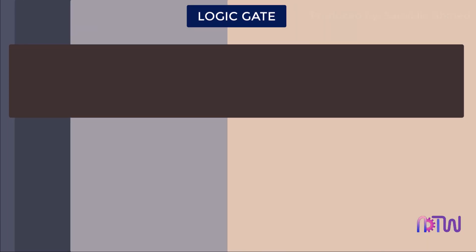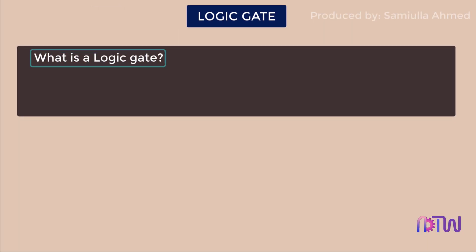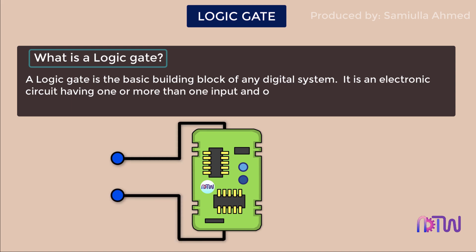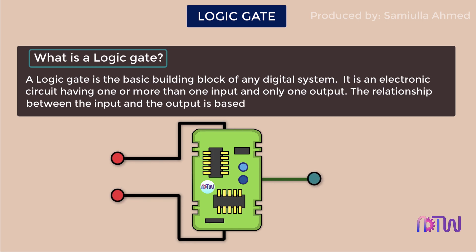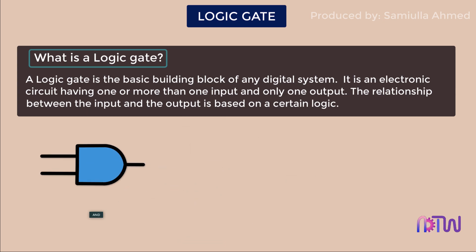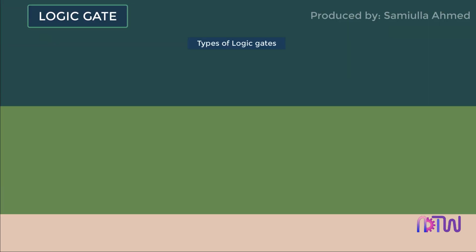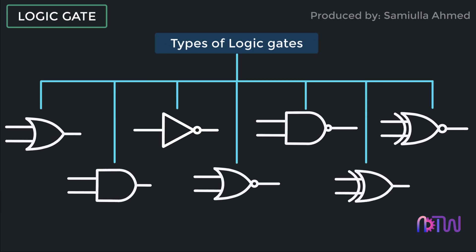Logic gates: what is a logic gate? A logic gate is the basic building block of any digital system. It is an electronic circuit having one or more inputs and only one output. The relationship between the input and the output is based on a certain logic. Based on this logic, gates are named as AND gate, OR gate, NOT gate, etc. There are a total of seven types of basic logic gates which we will discuss in this video, along with their truth table.